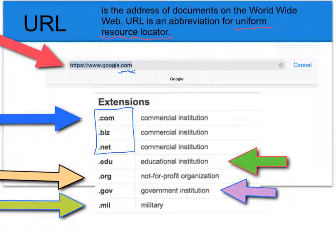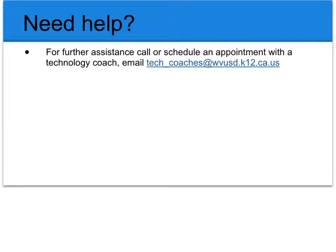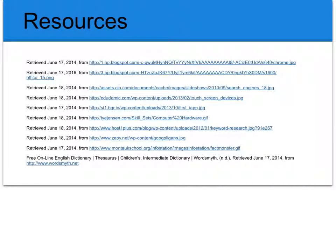.gov is for government institutions, and .mil is for military institutions or military websites. Now that you better understand extensions and a URL, you will be able to identify the types of organizations that these websites were created for. If you need further assistance, you can call or schedule an appointment with the technology coach. I hope you found this video interesting — thank you for your time and interest in understanding the terms related to technology.